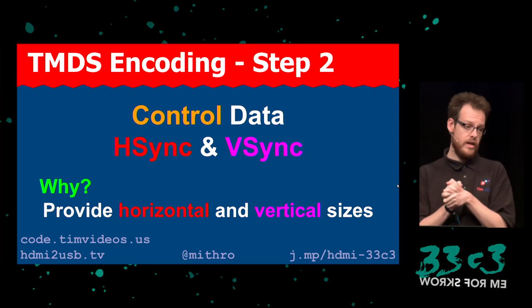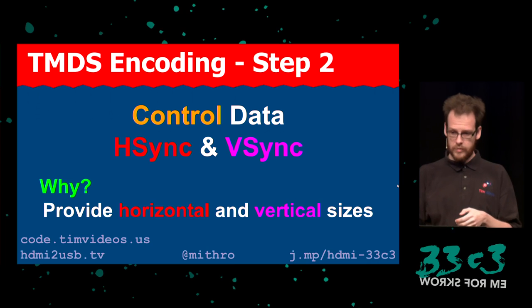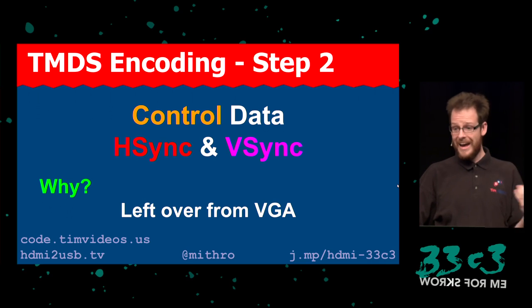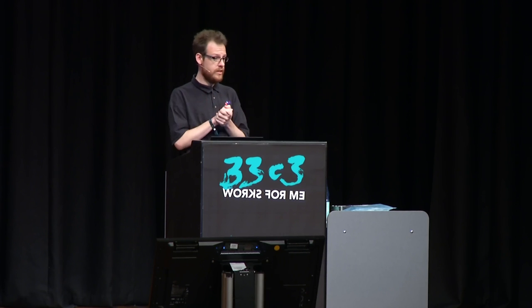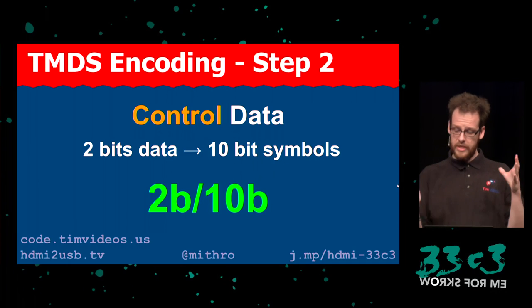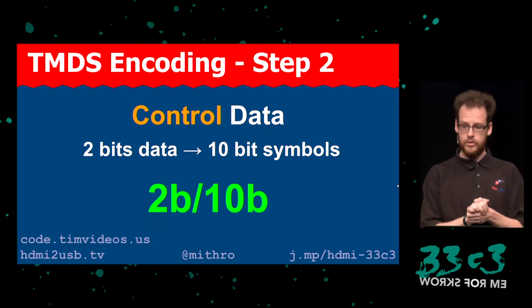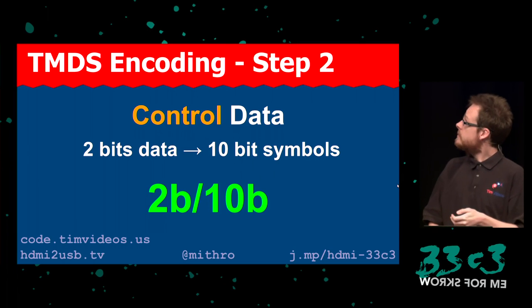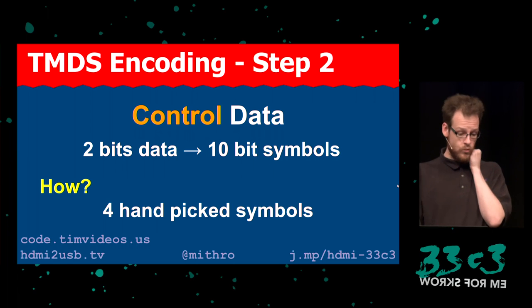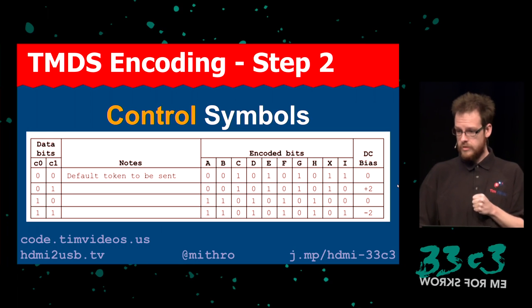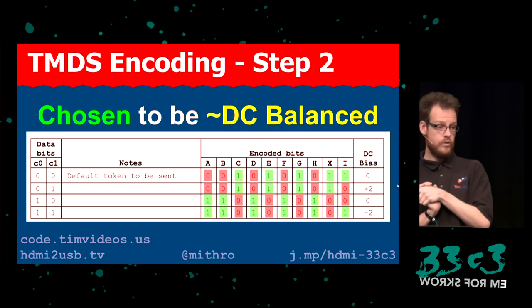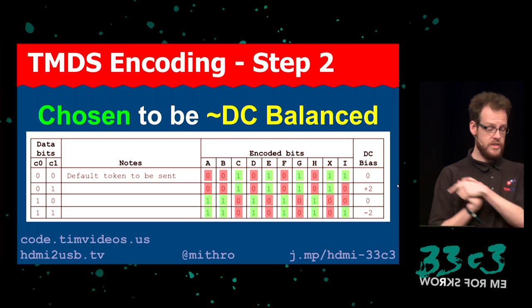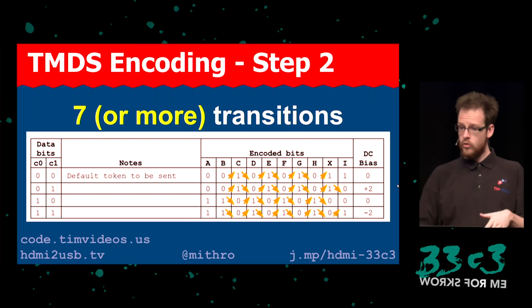How do we convert control data into control symbols? First, let's look at what's in control data: two bits — horizontal sync (H-Sync) and vertical sync (V-Sync). These provide horizontal and vertical synchronization data, a legacy of VGA. We no longer need them in HDMI or DVI to determine screen edges, since we can now determine the difference between control and pixel data. But they still exist for backward compatibility. So for control data, we convert 2 bits into 10-bit symbols. The answer is simple: four symbols were chosen in advance. These four symbols have been chosen to be DC-balanced — roughly equal numbers of 1s and 0s — so we don't need to track DC disparity bias for control symbols.